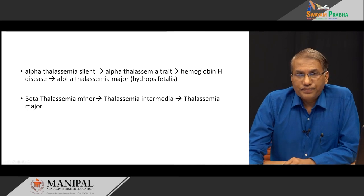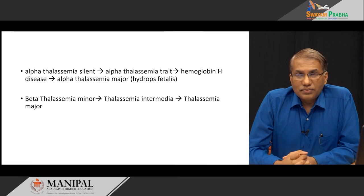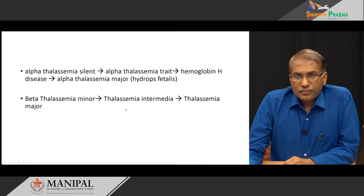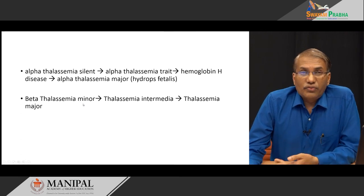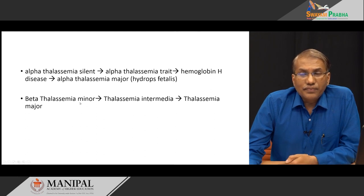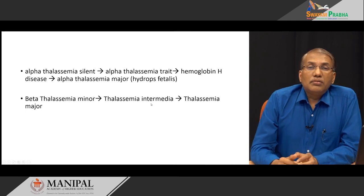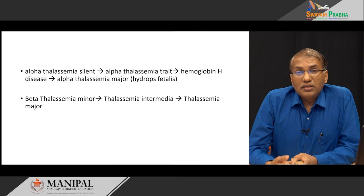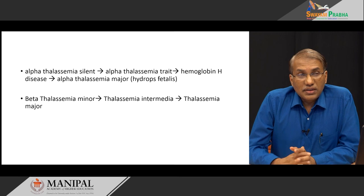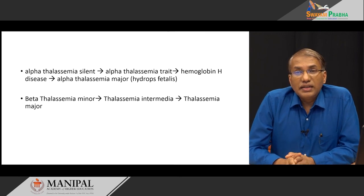In alpha thalassemia, if one alpha gene is defective, it is called alpha thalassemia silent — no clinical problem. If two genes are defective, it is alpha thalassemia trait, with possibly mild hemolytic anemia. If three genes are defective, it is HbH disease. If all four alpha genes are defective, it is alpha thalassemia major, sometimes called hydrops fetalis, wherein the baby in the womb becomes severely bloated with fluid collection — a very severe and potentially fatal condition.